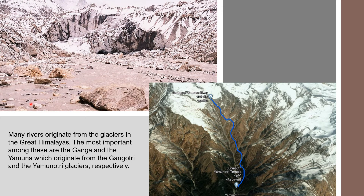Many rivers originate from the glaciers of the Great Himalayas, the most important being the Ganga and the Yamuna. The Ganga originates from the Gangotri Glacier; its originating point, the Gomukh, looks like the snout of a cow. Its major tributary, the Yamuna, also originates from the Yamunotri Glacier, not far from Gangotri, and ultimately meets the Ganga far away in Prayagraj.